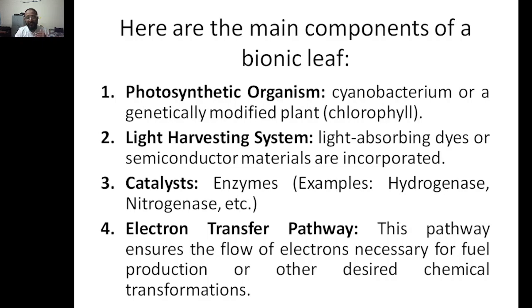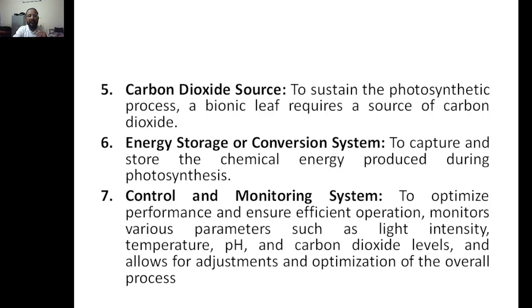For catalysts, enzymes such as hydrogenase and nitrogenase can be used, or microbes. The electron transfer pathway ensures the electrons necessary for fuel production or other desired chemical transformations. A carbon dioxide source is also required because to sustain photosynthesis you need carbon dioxide — so the bionic leaf requires CO2. The next component is energy storage or conversion, to capture and store the chemical energy produced during photosynthesis.